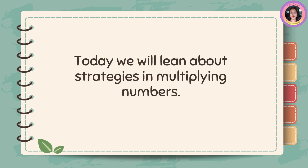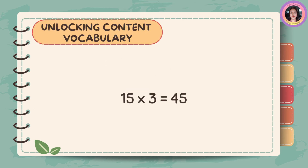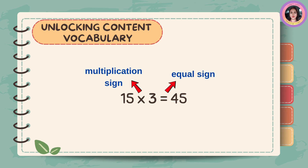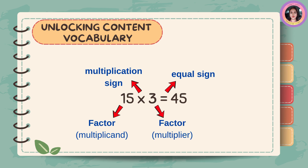Today, we will learn about strategies in multiplying numbers. The x sign is the multiplication sign, followed by the equal sign. 15 is the factor or the multiplicand, 3 is also the factor or the multiplier, and 45 is the product.